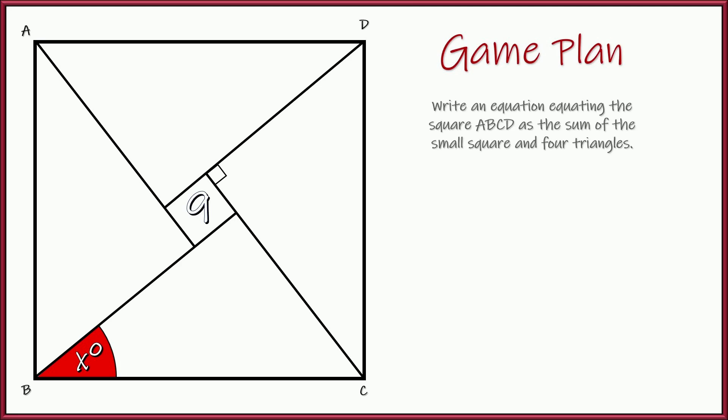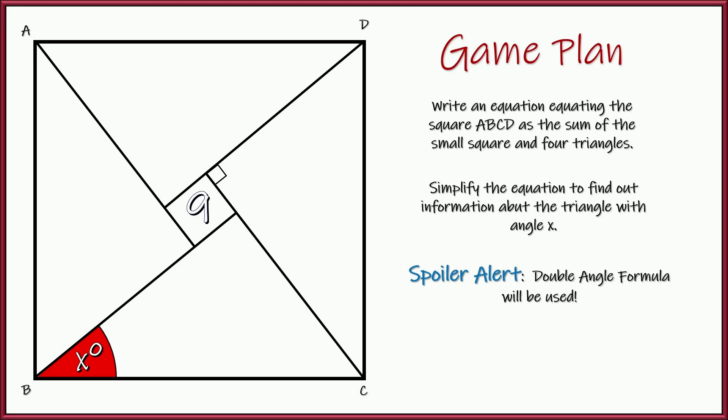Here's how I'm going to do it. I'm going to write an equation for the area of the square ABCD as being the sum of the small square plus these four triangles. And then I'm going to see if I can simplify that and isolate the angle x. And, spoiler alert, we're going to end up using the double angle formula.